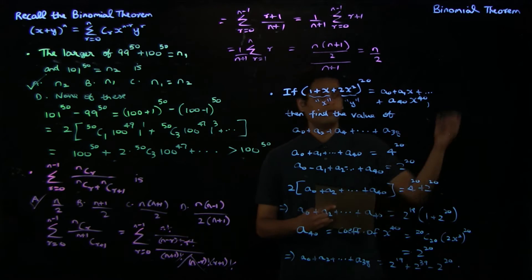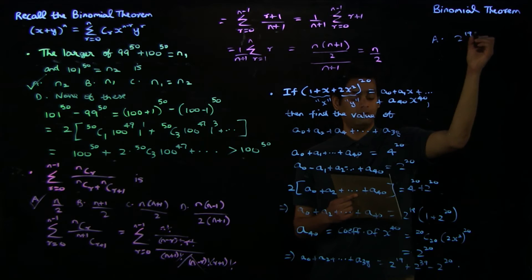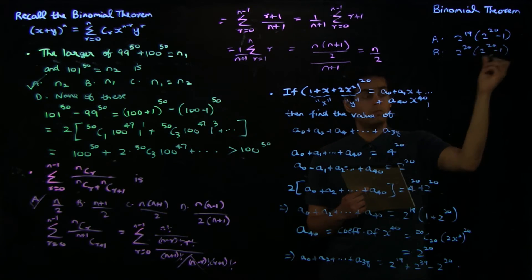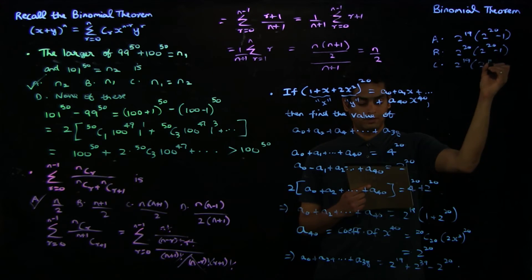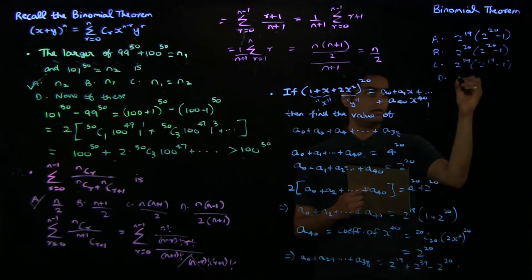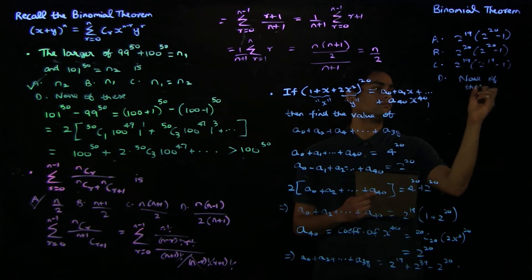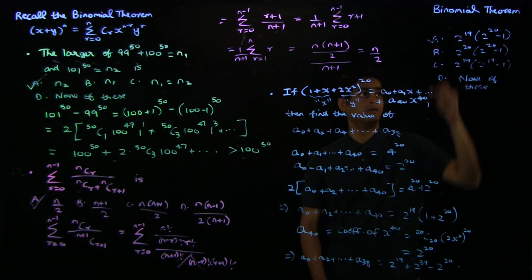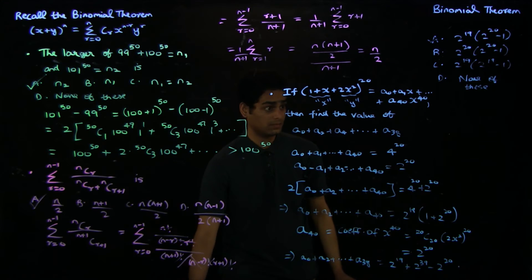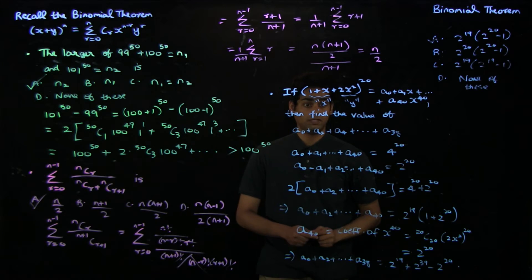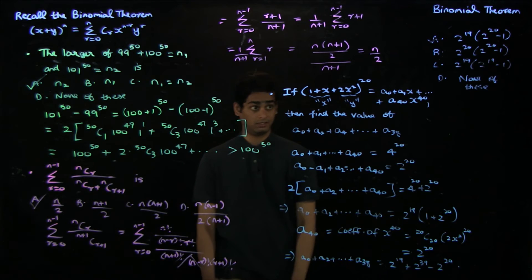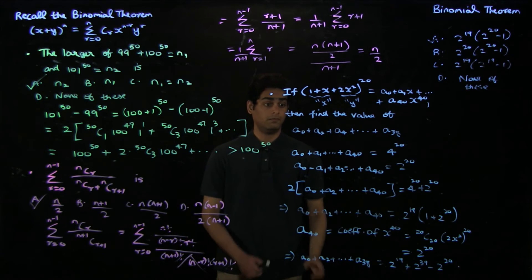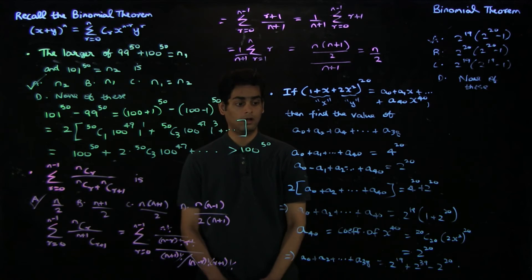The options for this example are: 2 power 19 times 2 power 20 minus 1; 2 power 20 times 2 power 20 minus 1; and 2 power 19 times 2 power 19 minus 1. That is a systematic way of deriving this result. Notice that we wanted to find the sum of a subset of coefficients, and to do that we plugged in suitable values of x to isolate the sum we needed using suitable combinations.